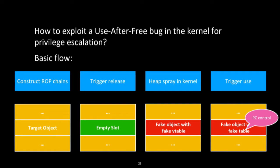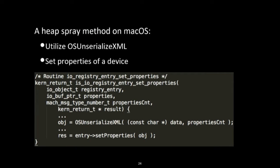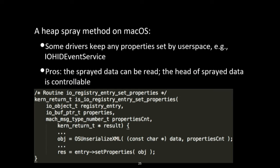To exploit a use-after-free bug in the kernel, the basic flow is: construct the ROP chains, trigger the release, then use a fake object with a fake vtable to occupy the freed slot. Finally, trigger the use-after-free by invoking the method of the old object. The heap spray technique used here is OSUnserializeXML — invoked by setting properties of a device. The spread data can be read, and the head of the spread data is controllable.